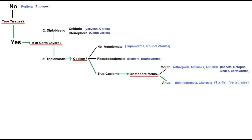Next, we can look at the number of germ layers an organism has. Only cnidarians and ctenophores, which are basically jellyfish, have two, and all others have three. Next, we can look at whether or not an organism has a body cavity. Tapeworms lack one, rotifers have a false one — pseudocoelum is the term — and all other organisms do have a true body cavity.